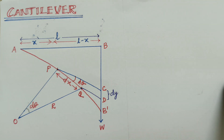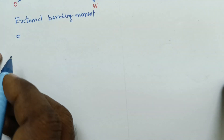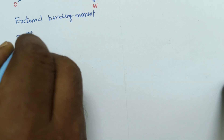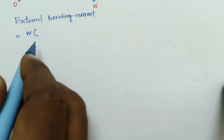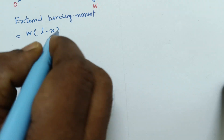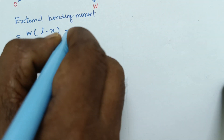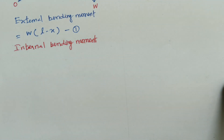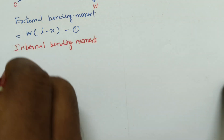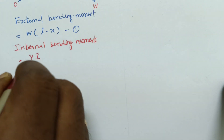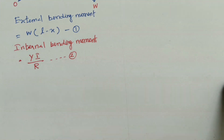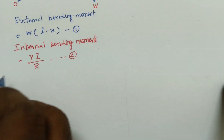This whole length is L. A to B is X, so P to B-dash has the length of L minus X. Already we know that the external bending moment is calculated as weight into the length P to B-dash, that is W into (L minus X). This is equation number 1. The internal bending moment is YI by R. This is equation number 2.